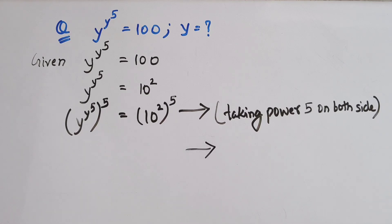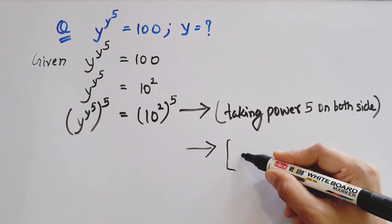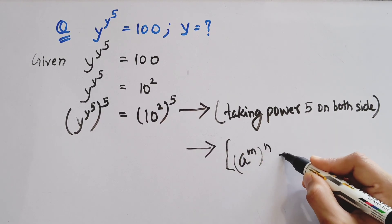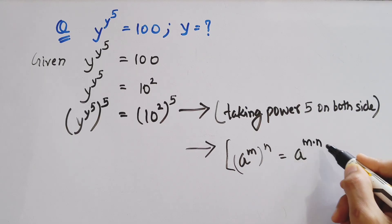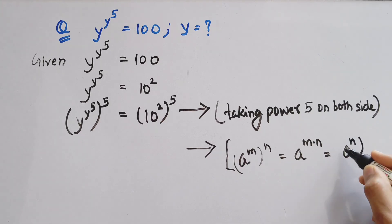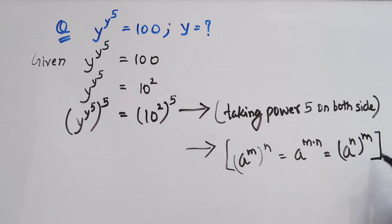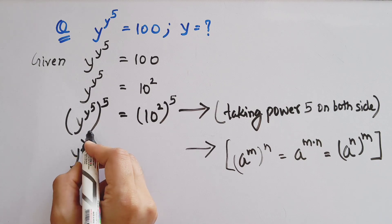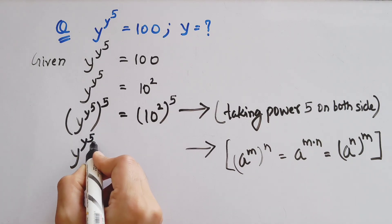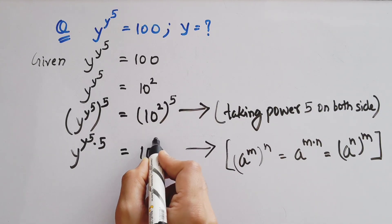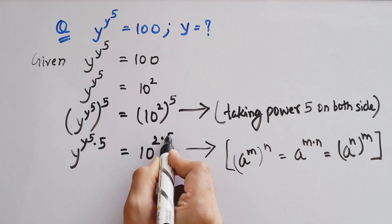We have a rule of exponent: a to the power m to the power n, we can write as a to the power m into n. And we can also write a to the power n to the power m. So we'll apply this rule. We have y to the power y to the power 5 into 5, equals to 10 to the power 2 into 5.